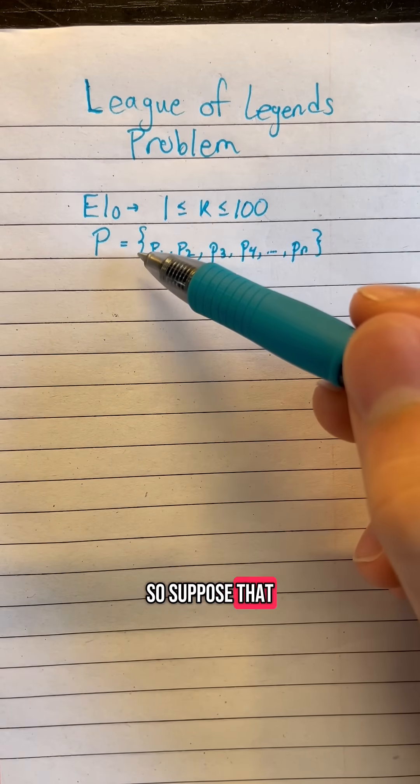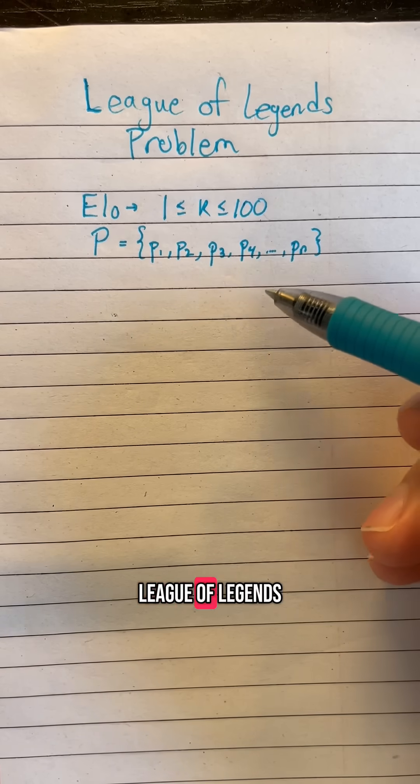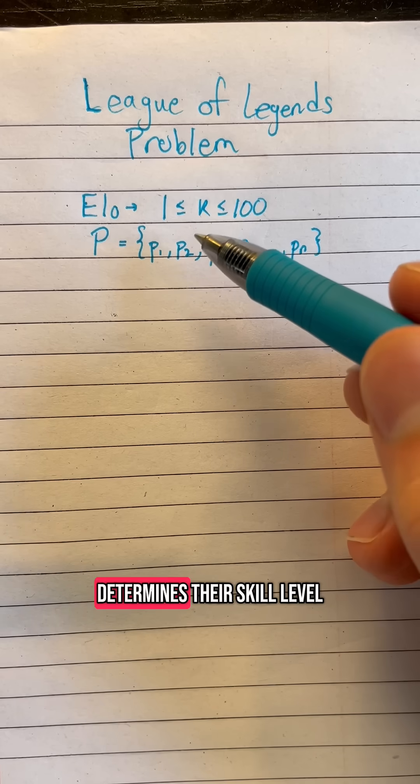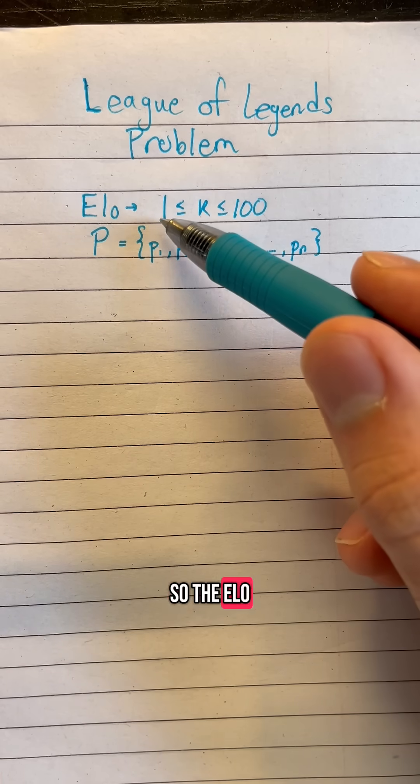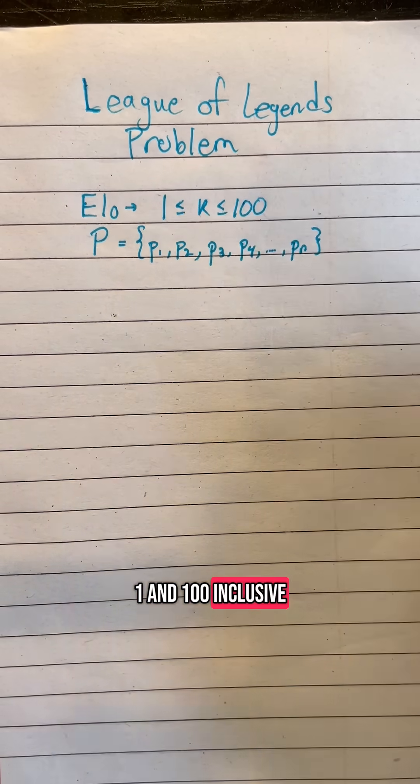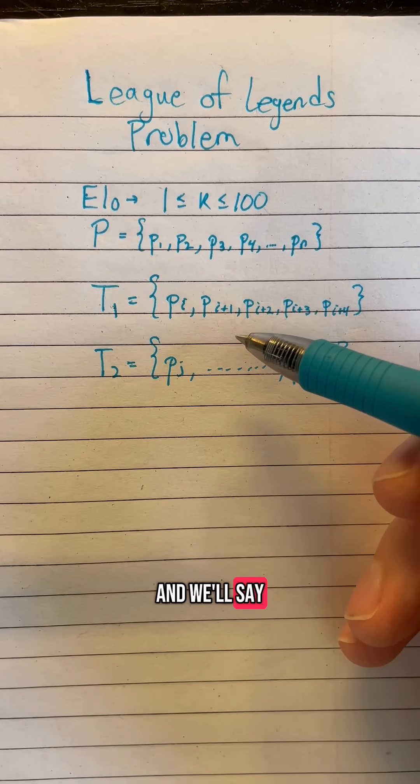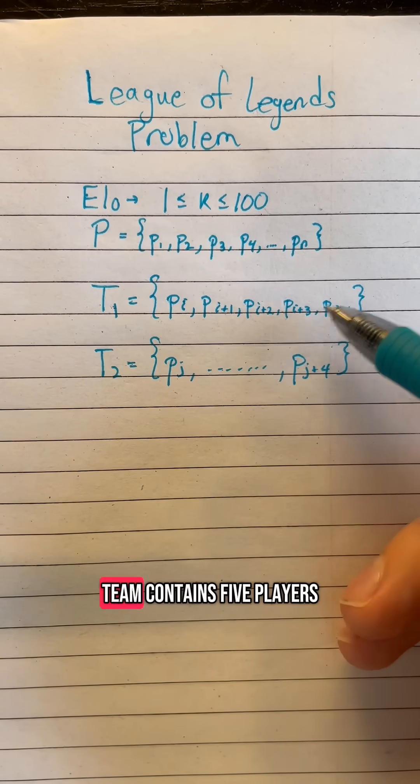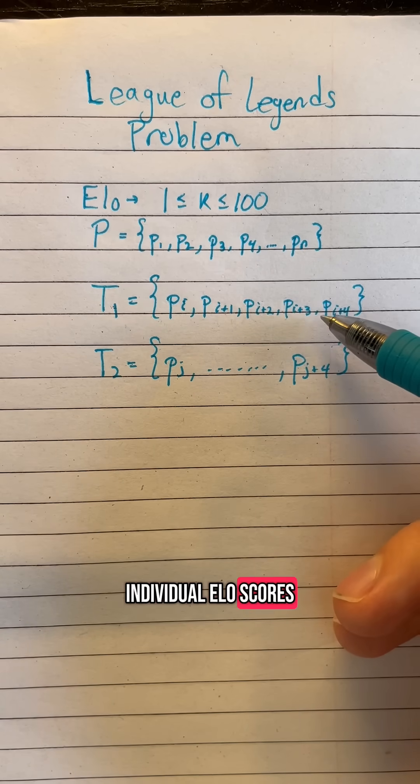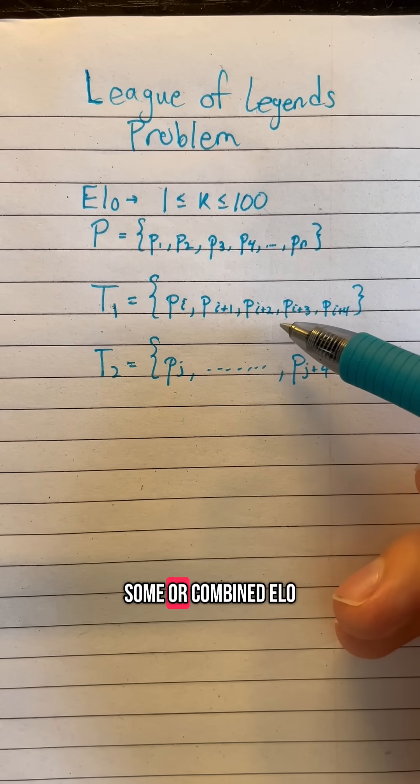Suppose that we are selecting a group of players that we are going to try to make a League of Legends match out of, and these players all have an ELO score that determines their skill level. The ELO score can be an integer between 1 and 100 inclusive. When we're getting a game of League of Legends, we want to have two balanced teams. We'll say that teams are balanced if each team contains five players and when you add up the individual ELO scores of each of those players, the two teams have the same sum or combined ELO.